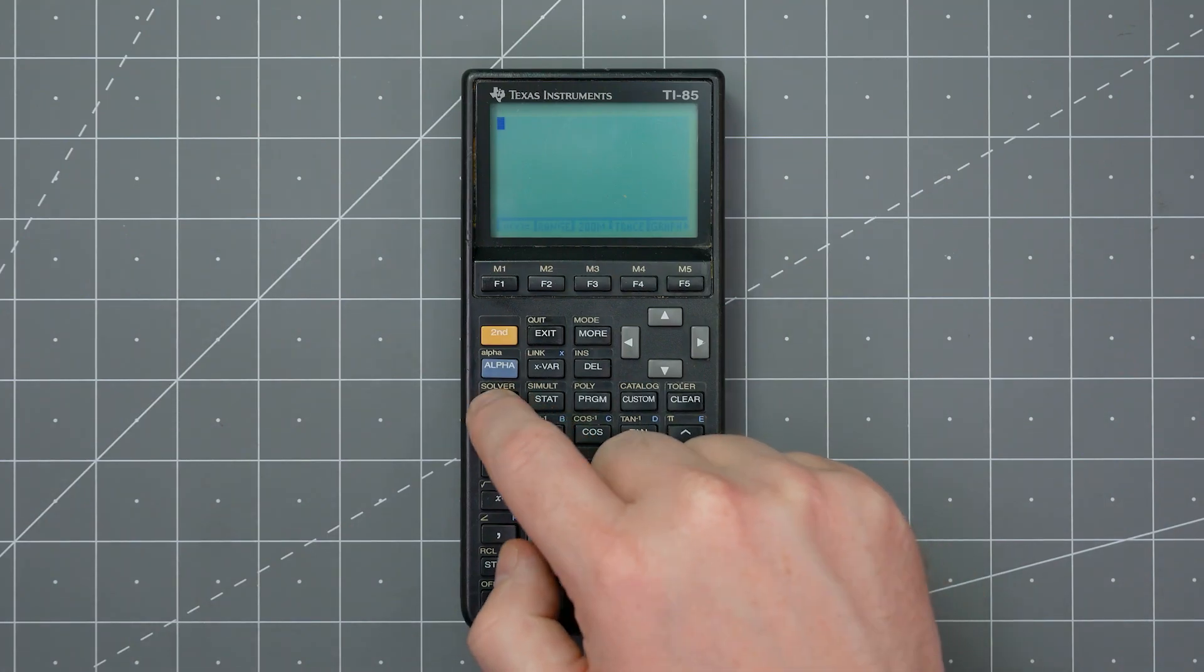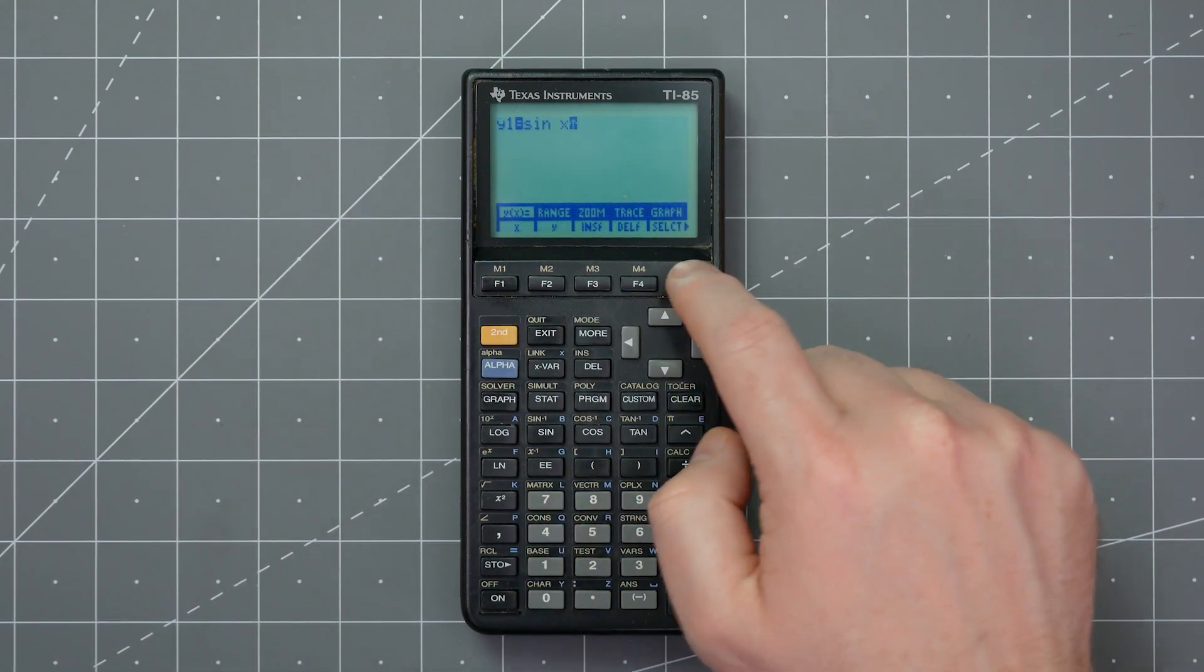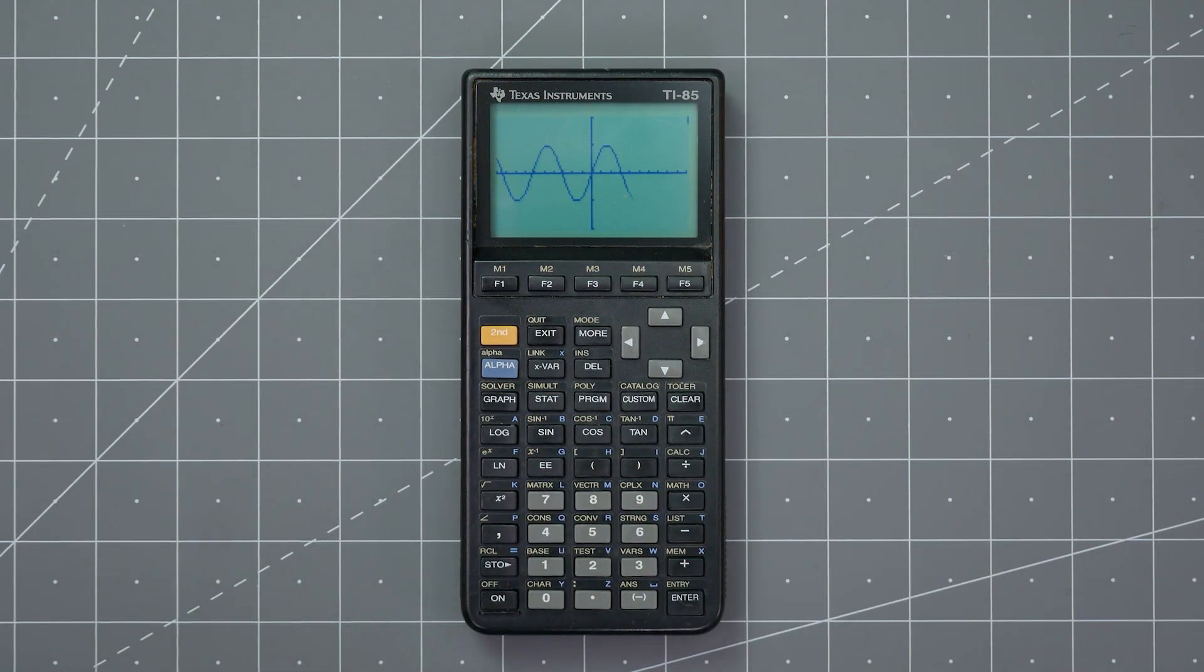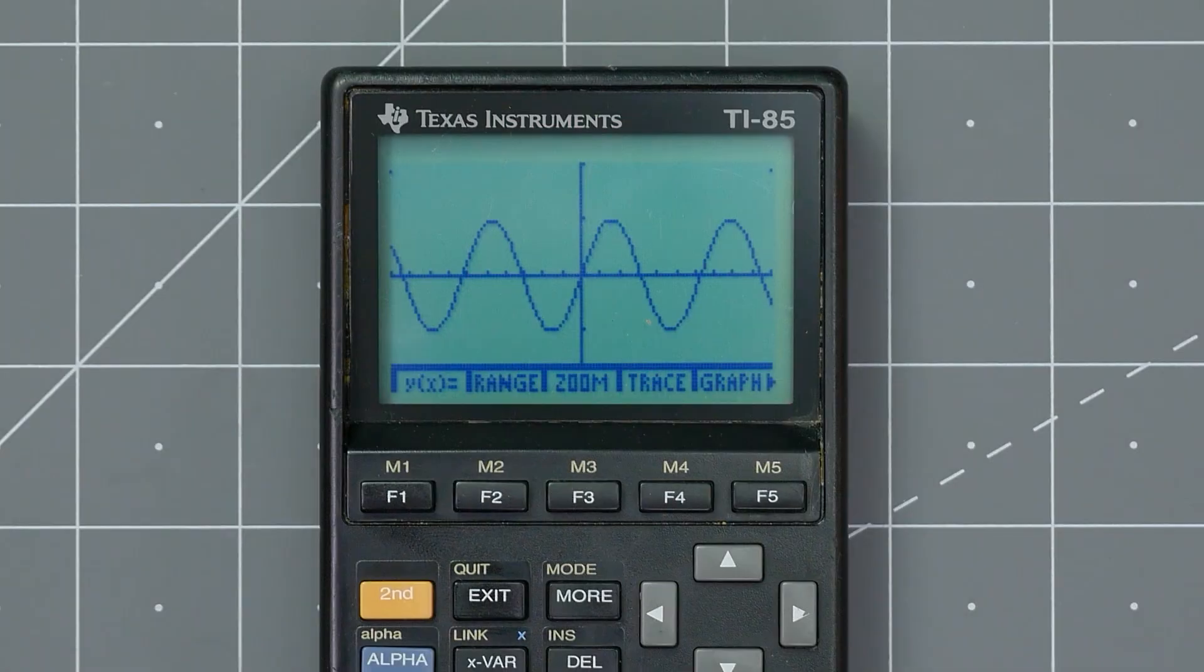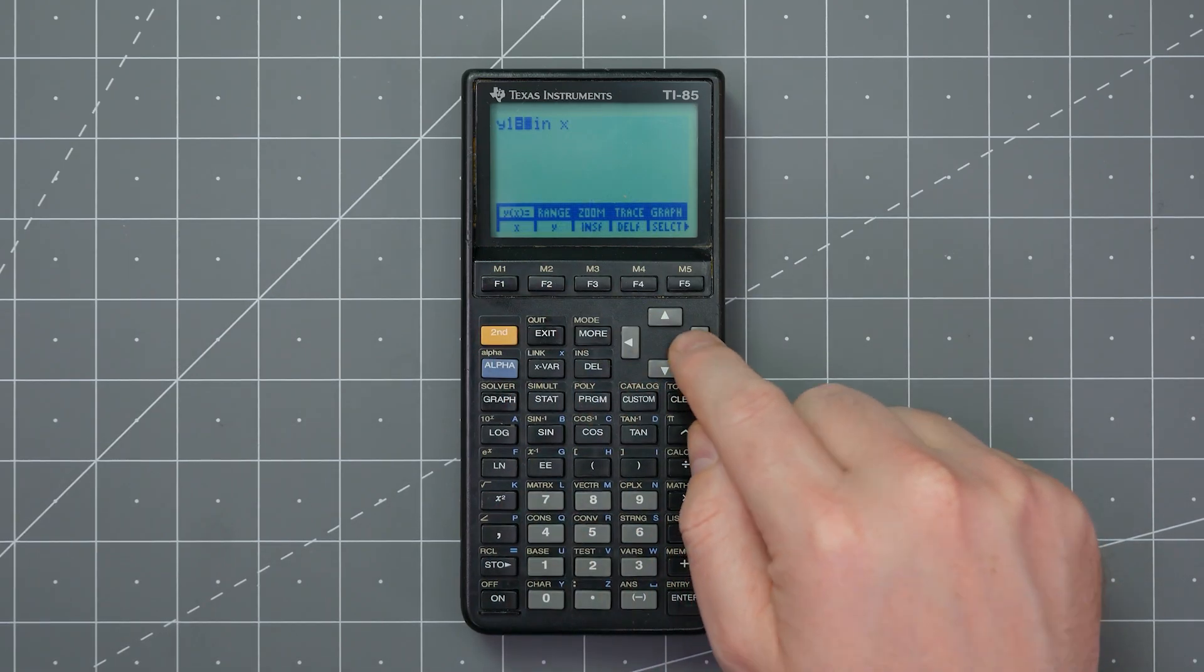You might remember using graphing calculators in geometry class to draw algebraic functions like y equals sine of x. And if you do not remember, here's my graphing calculator drawing that math function. This simple equation creates the most basic signal type used in electronics, the sine wave. All signals are fundamentally made up of sine waves.